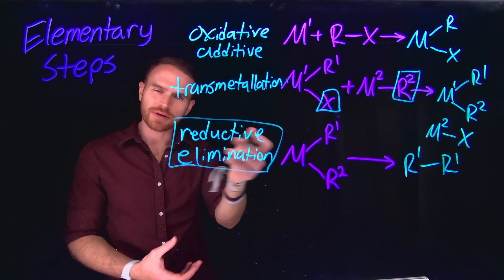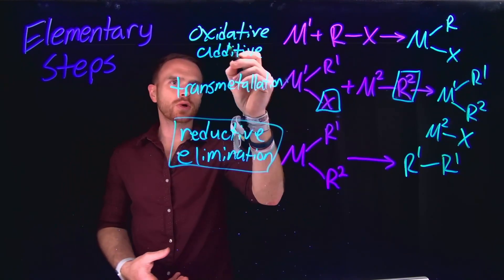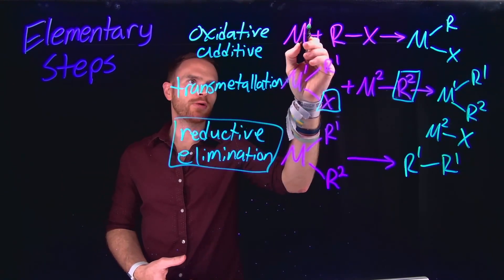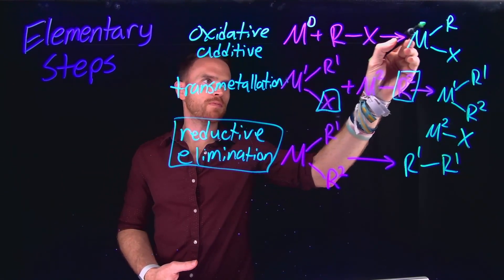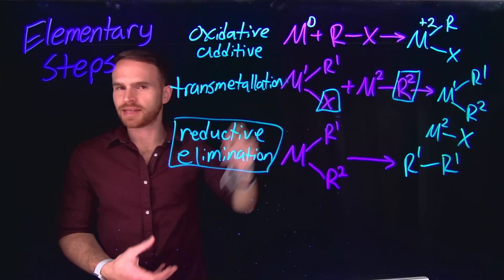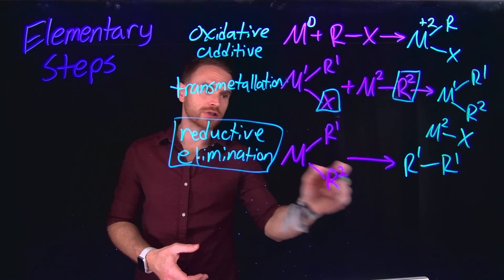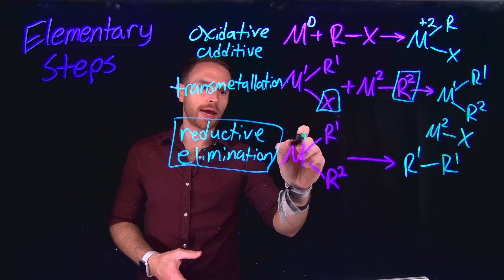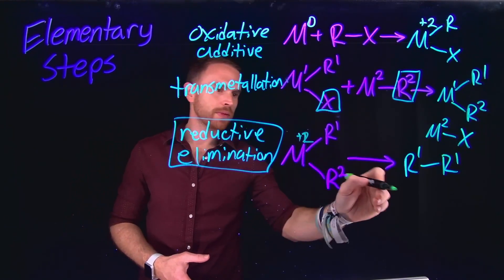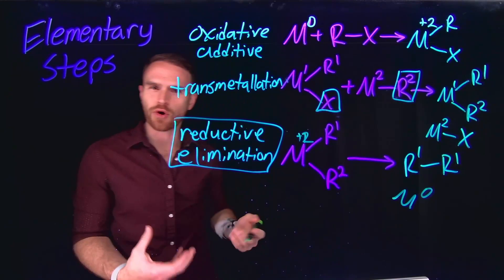And these names are derived actually from what happens at the metal center. So the oxidation state of the metal goes from zero to plus two in the example of oxidative addition. And in reductive elimination, since it's the microscopic reverse, the metal actually goes from a plus two to now being a zero oxidation state.